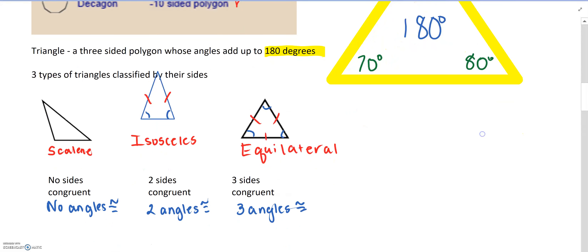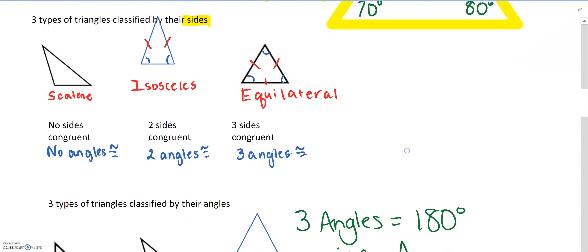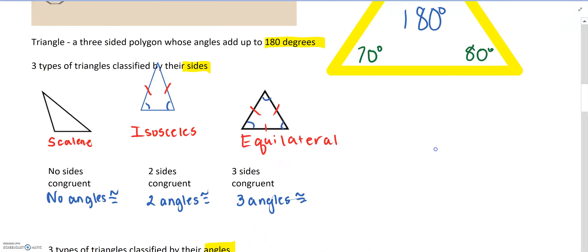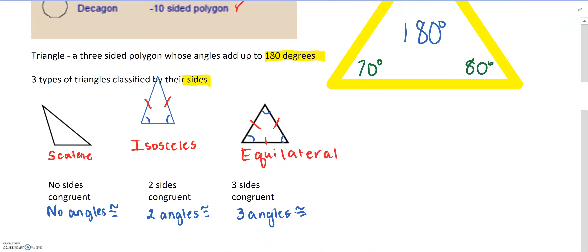Now let's look at how to classify triangles. You can classify triangles by their sides or by their angles — we'll start with sides. A scalene triangle has no sides congruent, which also means no angles are congruent.